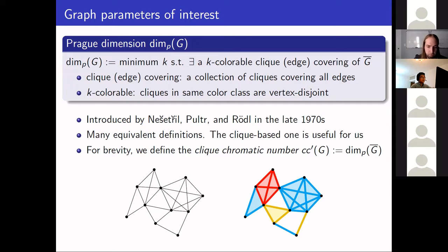There was a question: if one edge in the graph belongs to two cliques — say a blue and a red clique — is that a problem? No, it doesn't matter. An edge can be covered by both cliques. The only requirement is that if two cliques share the same vertex, they need to receive different colors.